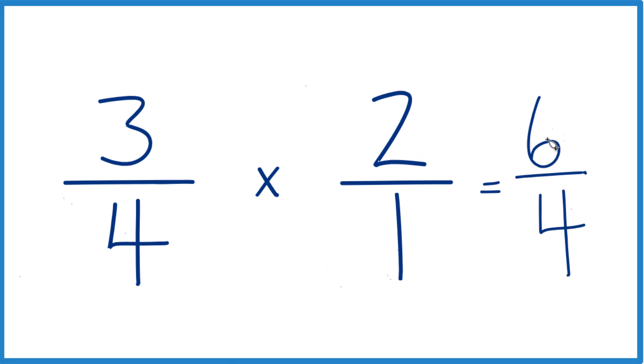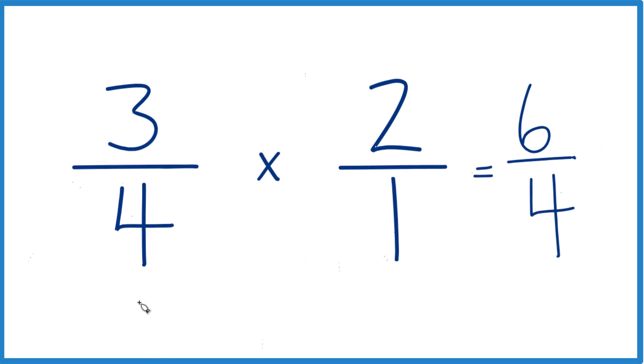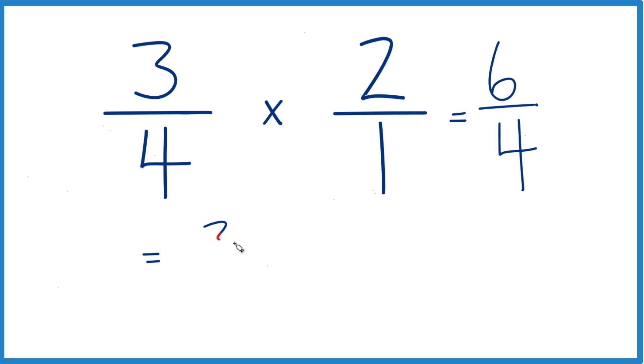We can simplify this because these are both even numbers. Let's divide each by 2. 6 divided by 2 equals 3. 4 divided by 2 equals 2. So we end up with 3 halves.